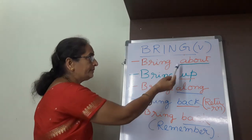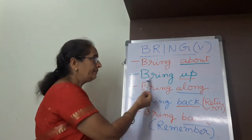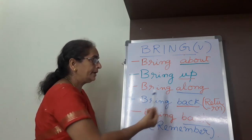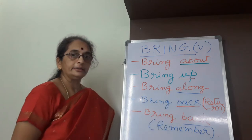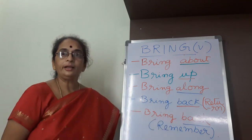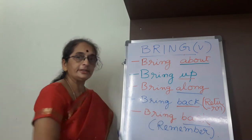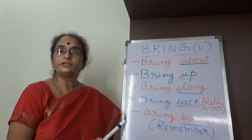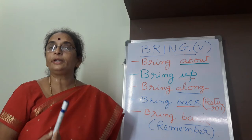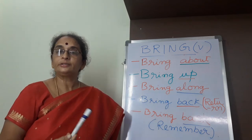The first phrasal verb is 'bring about', the second one 'bring up', third one 'bring along', fourth one 'bring back'. The fifth one is also 'bring back', and this same phrasal verb has two different shades of meaning, so we are going to deal with that also in this session.